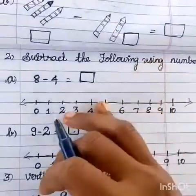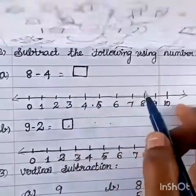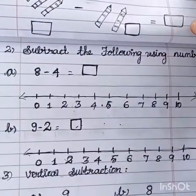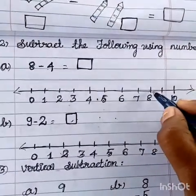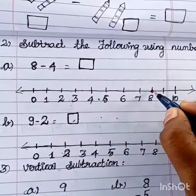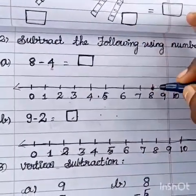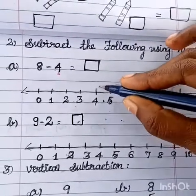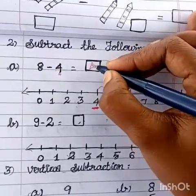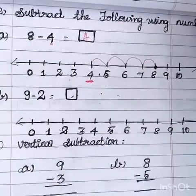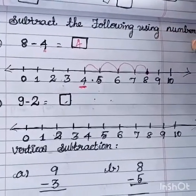Number line, use the number line. So, 3 minus 1 is equal to dash. So the answer is 7.